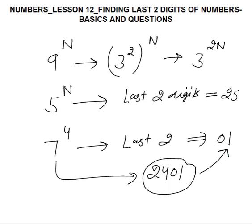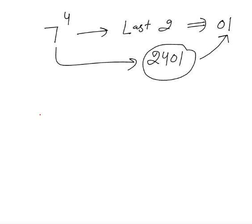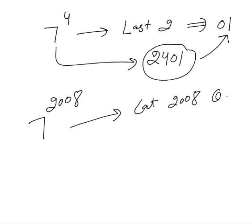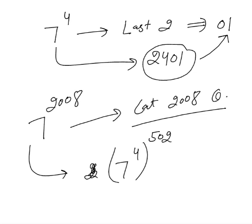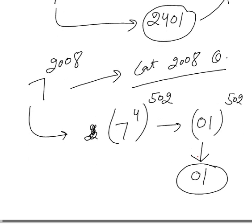For example, 7^2008 — this is an actual CAT 2008 question. We write 2008 = 4 × 502, so 7^2008 = (7^4)^502. The last two digits of 7^4 are 01, so this becomes 01^502. Since 01 raised to any power gives last two digits 01, the answer is 01. This question can be solved in under 30 seconds.